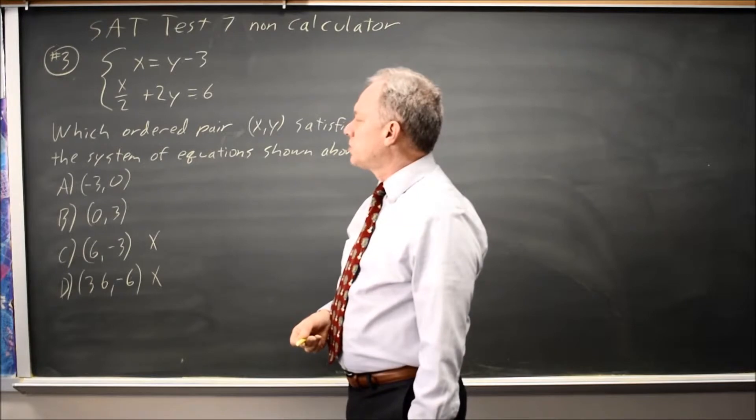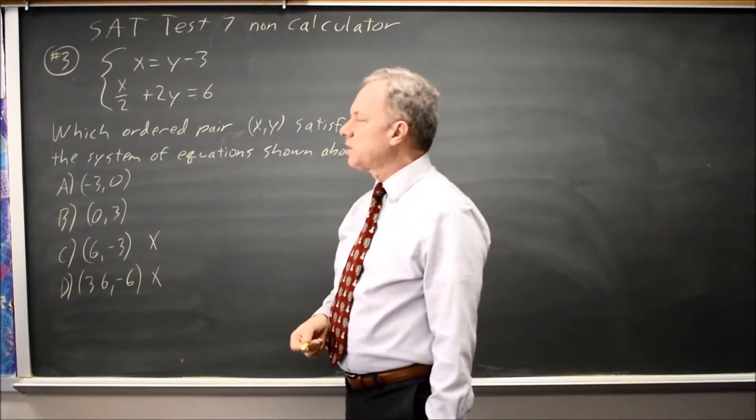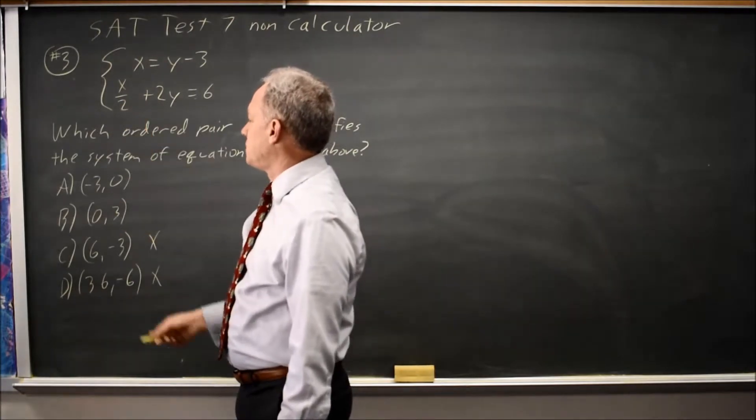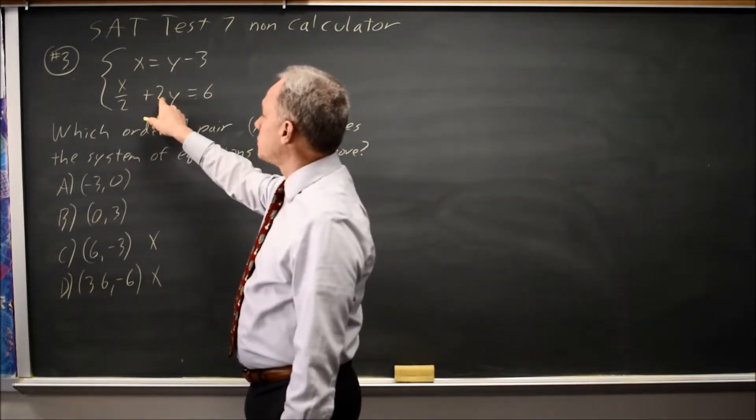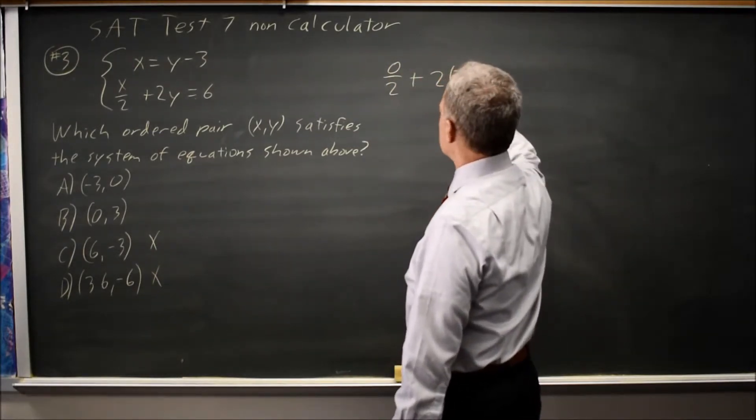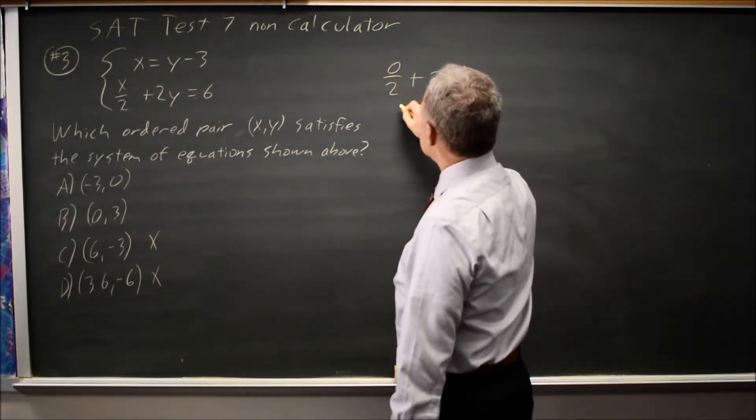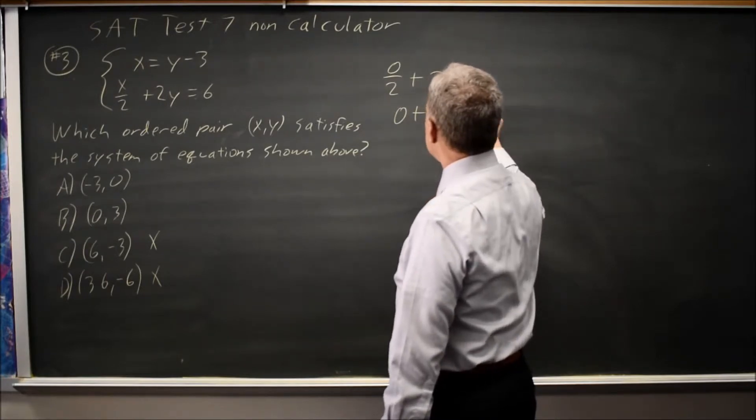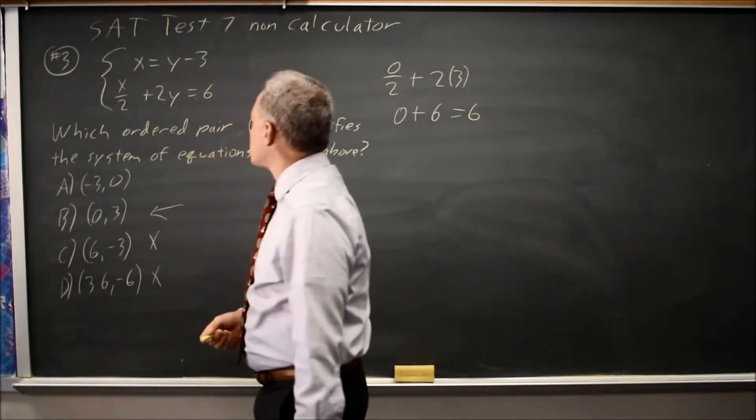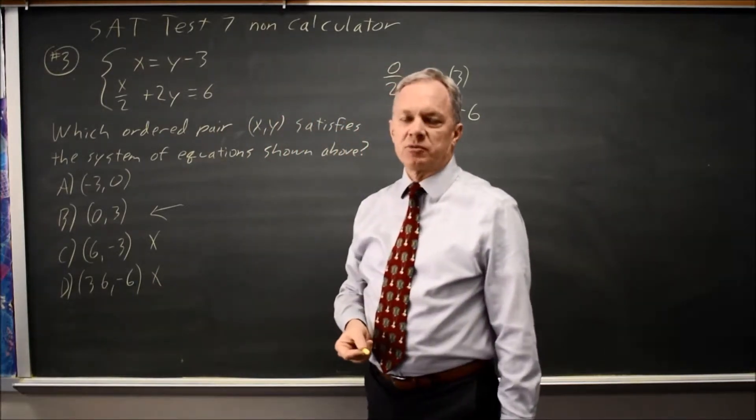The correct answer would be either A or B, and I'm going to plug choice B into the second equation because that way I have 0 over 2, which is easy. 0 over 2 plus 2 times 3, that is 0 plus 6, and that is equal to 6. So choice B is the correct answer. It satisfies the system of equations shown above.